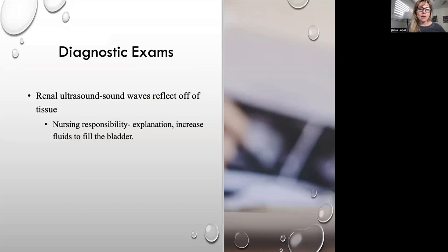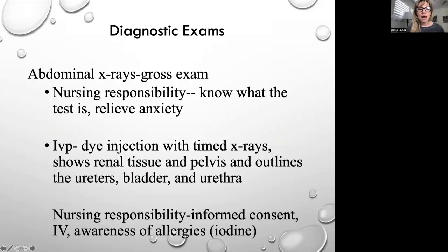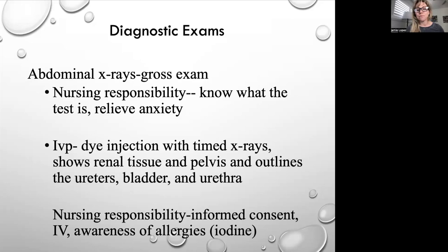A renal ultrasound reflects sound waves off tissue. Normally the patient must have an extremely full bladder, which is uncomfortable because the ultrasound wand is pressed over the bladder. We can also do abdominal x-rays and an intravenous pyelogram, where dye is injected — this is a timed x-ray showing renal tissue, the pelvis, bladder, and urethra outlines to identify obstructions. For the IVP, the patient must sign a consent form, have an IV placed, and be screened for iodine allergy.